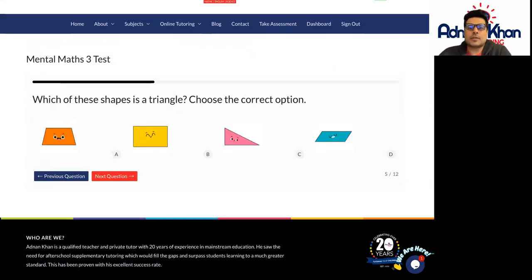So let's have a look at this question here, question number five as one example. Which of these shapes is a triangle?